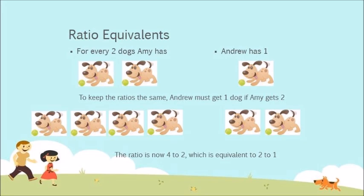Ratios can also be made equivalents. For every 2 dogs Amy has, Andrew has 1. To keep the ratios the same, Andrew must get 1 dog if Amy gets 2. So if Amy now has 4 dogs, Andrew must have 2. The ratio is now 4 to 2, which is equivalent to 2 to 1. Thank you.